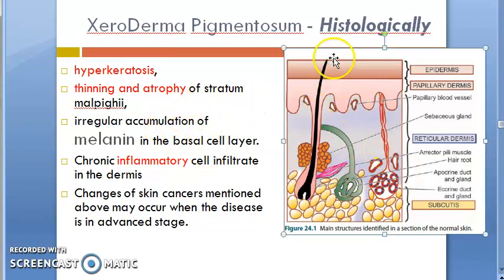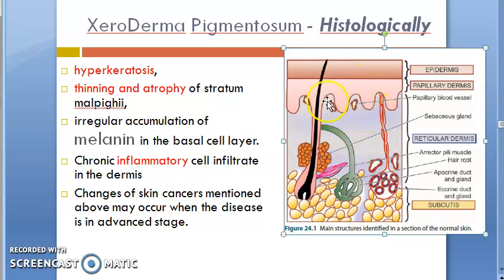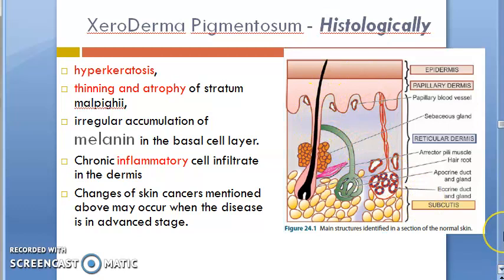Histologically, there is hyperkeratosis, thinning and atrophy of the stratum malpighii, and irregular accumulation of melanin in the basal cell layer. In the dermis, there will be inflammatory cells like lymphocytes and macrophages. That is all we wanted to cover again in the pre-malignant lesions of skin.